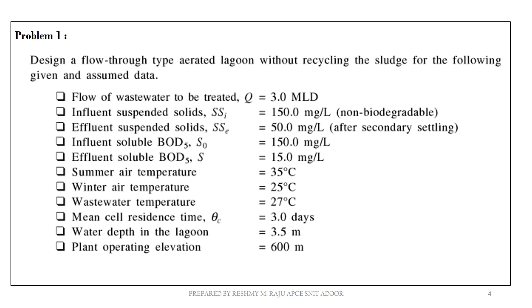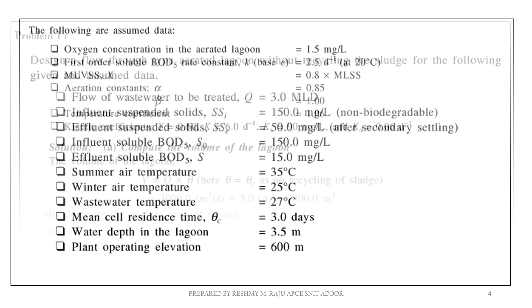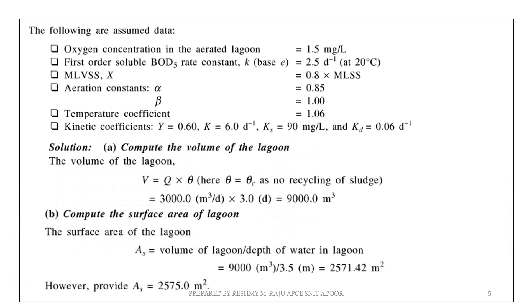We are going to study a problem: Design a flow-through type aerated lagoon without recycling the sludge. Given data — flow of wastewater: 3 MLD; influent suspended solids: 150 mg/L; effluent suspended solids: 50 mg/L; influent soluble BOD: 150 mg/L; effluent BOD: 15 mg/L; summer air temperature: 35°C; winter air temperature: 25°C; wastewater temperature: 27°C; mean cell residence time (θc): 3 days; water depth of lagoon: 3.5 m; plant operating elevation: 600 m.